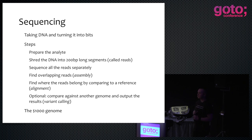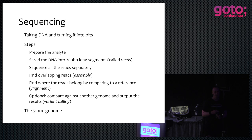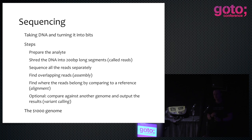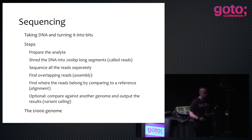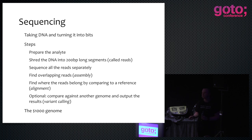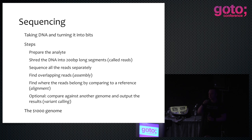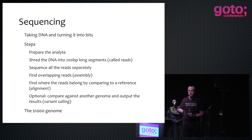Since then, the price and time necessary to do a sequencing for a person has dropped rapidly, and we are now very close to the point where you can get your genome sequenced for $1,000. The $1,000 genome is what people have been talking about as this magic limit. When we started this project, the price was down to maybe $10,000, and we could see the writing on the wall — the cost was going to go down further and further.